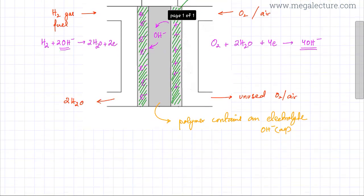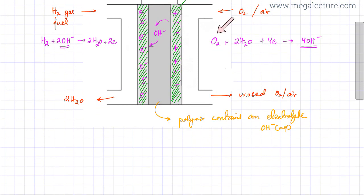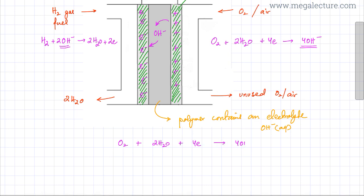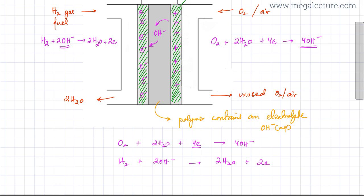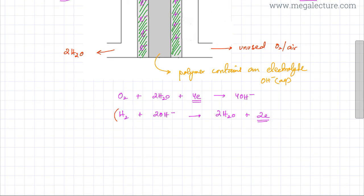I'll now write an overall equation for this hydrogen-oxygen fuel cell by adding the two half-reactions. The right-hand electrode reaction is: O₂ + 2H₂O + 4e⁻ → 4OH⁻. The left-hand electrode reaction is: H₂ + 2OH⁻ → 2H₂O + 2e⁻. Before adding them, I need to balance electrons — so I multiply the left-hand equation by 2.